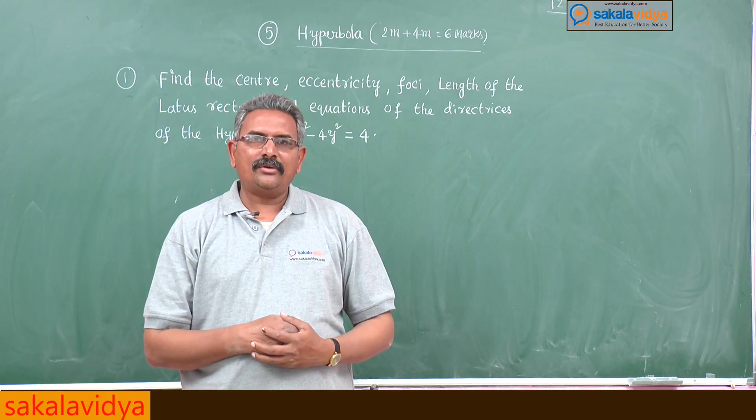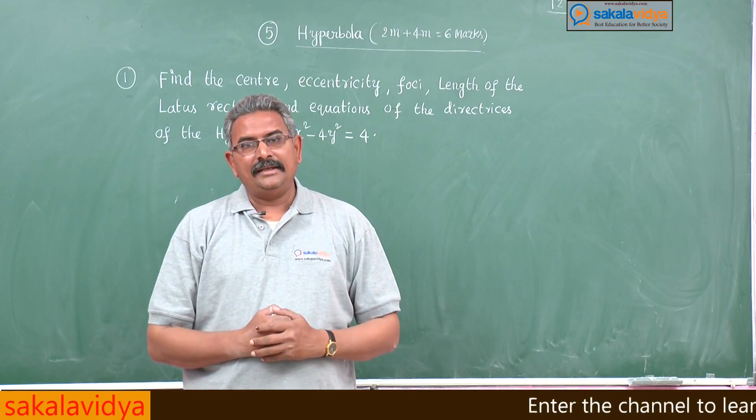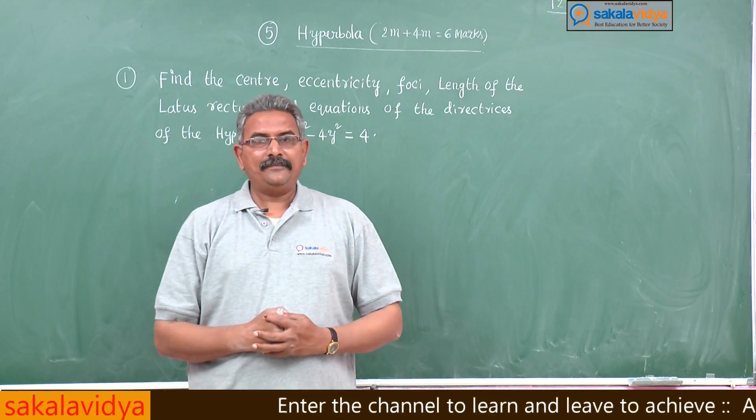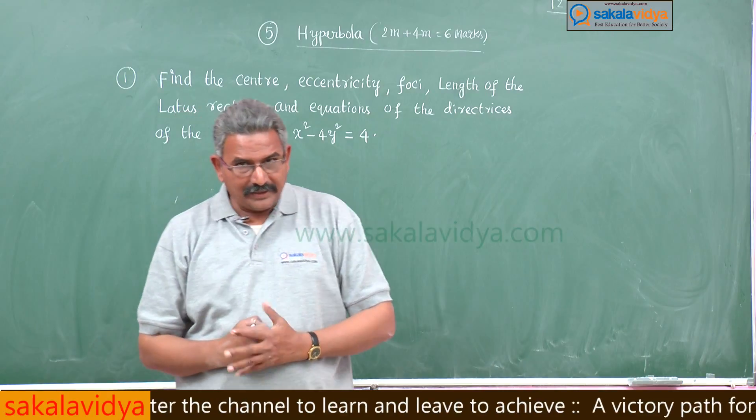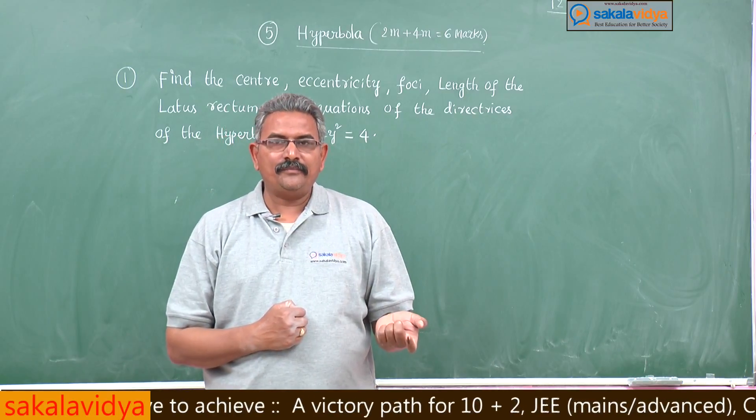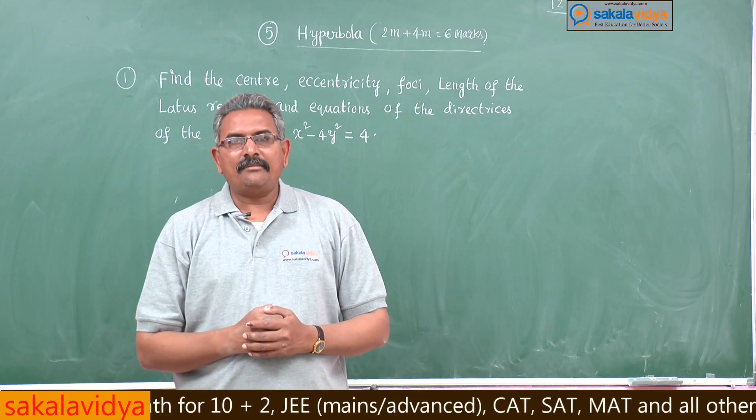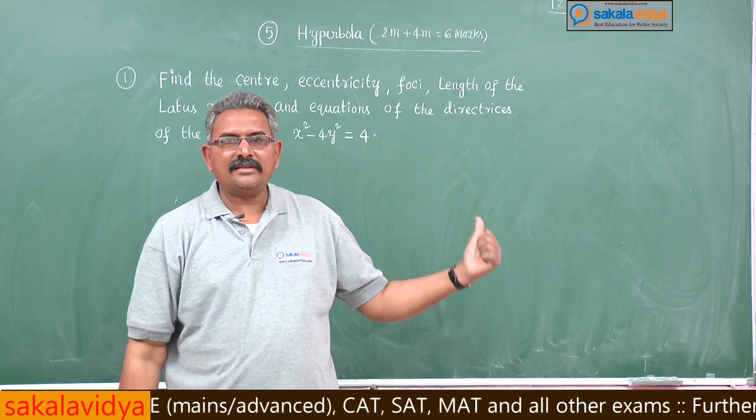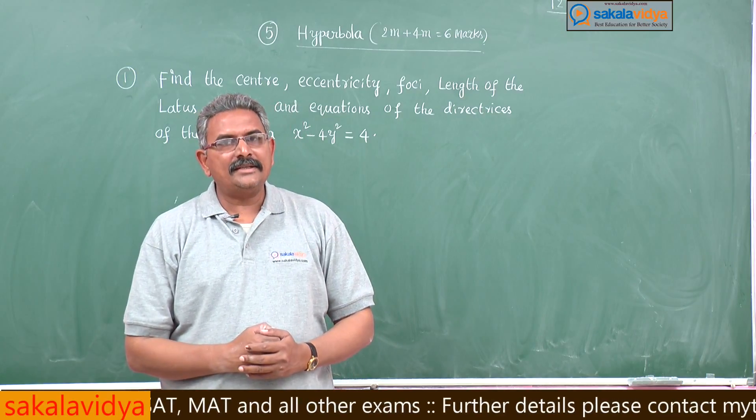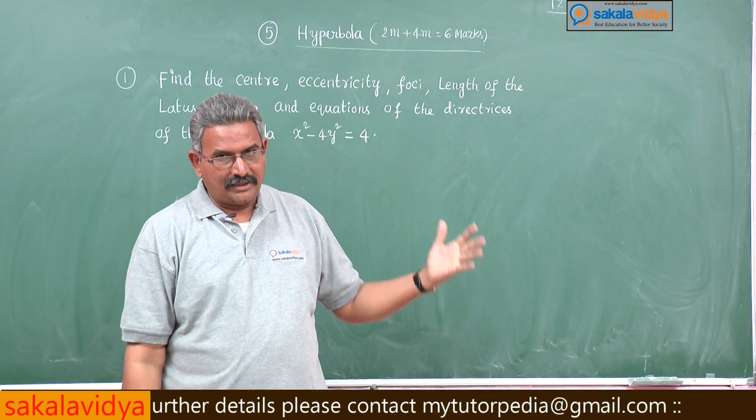Next, what we have to find out? Foci. In order to find out foci, first we have to evaluate eccentricity. Here E is equal to root over a square plus b square by a square. After evaluating eccentricity value, the foci is equal to plus or minus ae comma 0. Next, equations to the directrices is given by x is equal to plus or minus a by e.